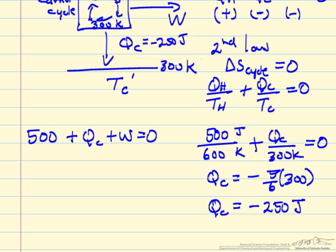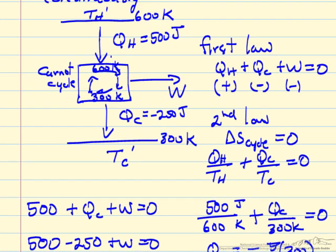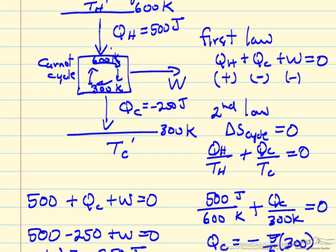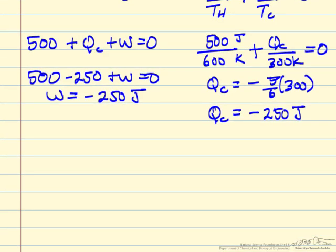We can go back to the first law, 500 minus 250 plus W is zero, W is also minus 250. So for this particular cycle and these choices of temperature, what we're saying is we can put 500 joules in and we get half of it out as work and the rest we reject to low temperature. Of course the first point is we can't convert all the heat into work. We have to reject heat at the low temperature.